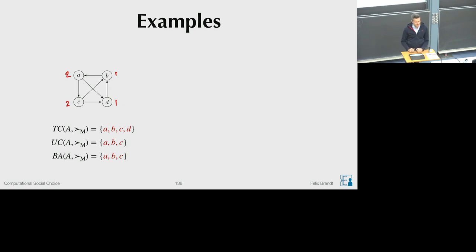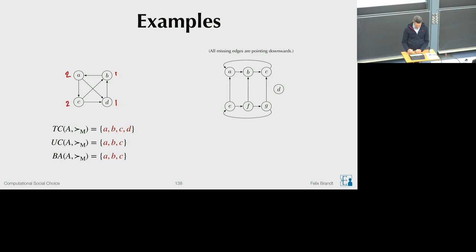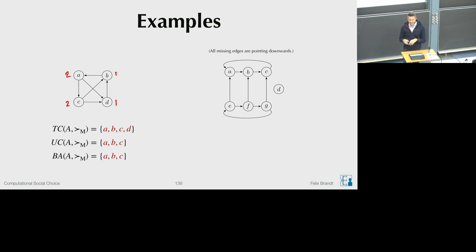We will prove formally that the bank set is always a subset of the uncovered set. This seven-alternative example is actually the smallest tournament for which the bank set is strictly smaller than the uncovered set. As we dig deeper into this hierarchy of majoritarian functions, we will often need large counterexamples to disprove certain things. Now let's look at the top cycle and uncovered set for this seven-alternative tournament, using the notation where all edges from top to bottom are omitted.